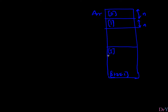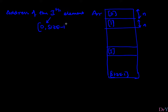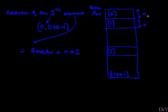To get to the ith element, where i can be between zero and size minus one inclusive, the address of the ith element is: base address of the array plus n times i. So if n equals 1, elements are 8-bit integers; if n equals 2, they are 16-bit integers, and so on. This is our formula for the ith element's address.